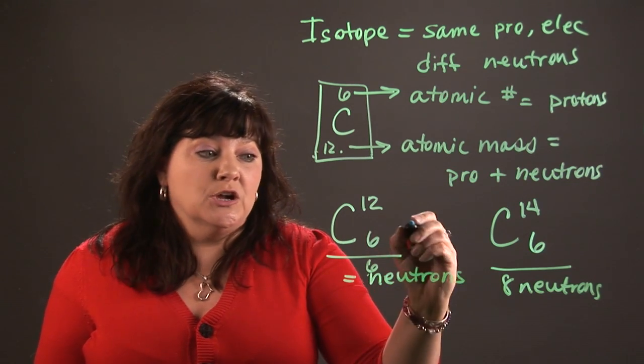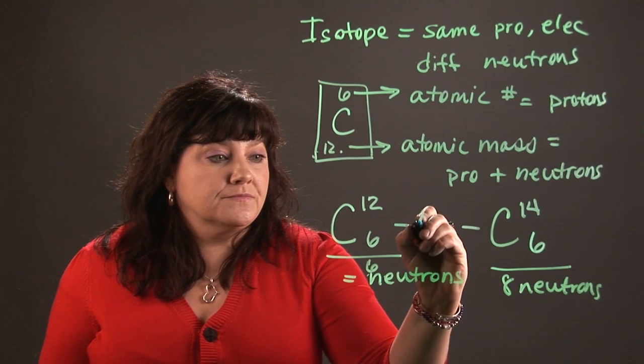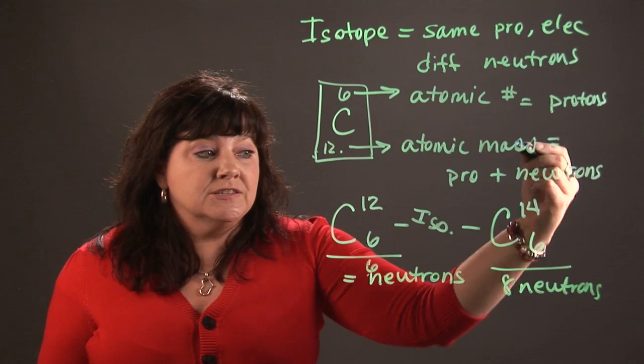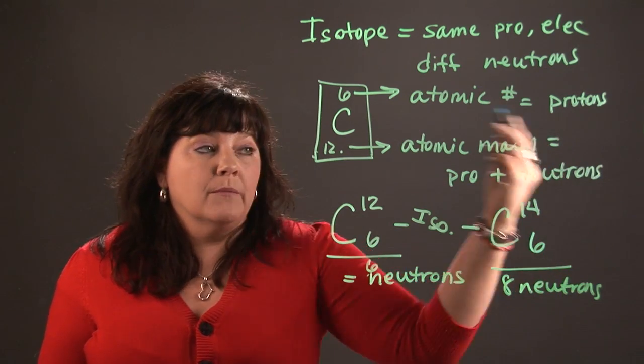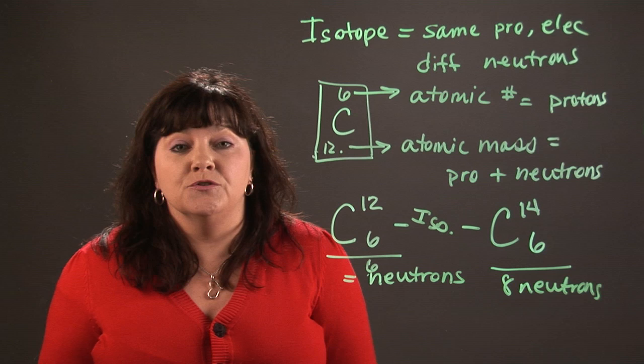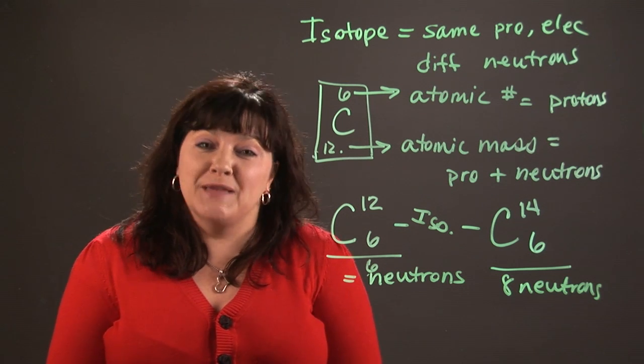These would be isotopes of each other. So subtract the atomic number from the atomic mass and that's how you figure out the number of neutrons, which is what you do for isotopes. I'm Janice. Have a great day.